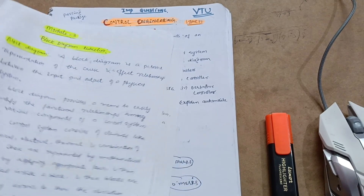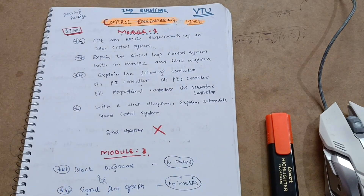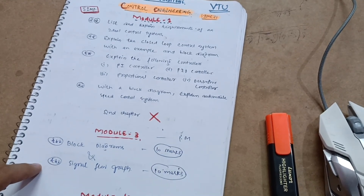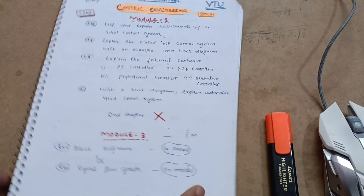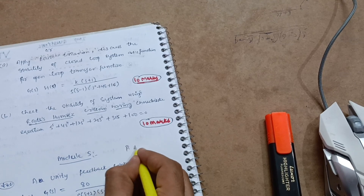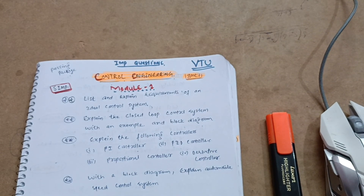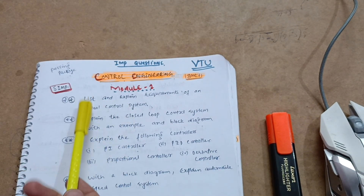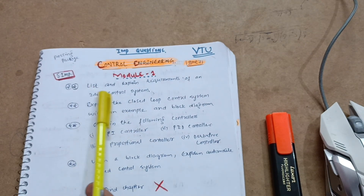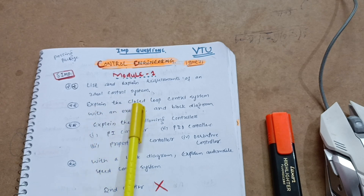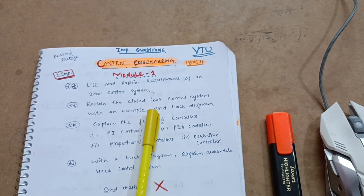Don't leave these modules — these are the passing modules. Module 3 is a passing module, Module 4 is a passing module, and Module 5 is a passing module. Now, discussing Module 1, which is the theoretical part — if you are good in theory, you can refer to super important questions I have listed here. For example: list and explain requirements of an ideal control system; explain the closed loop control system with an example and block diagram.